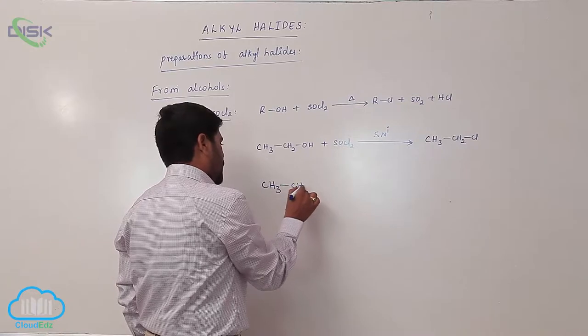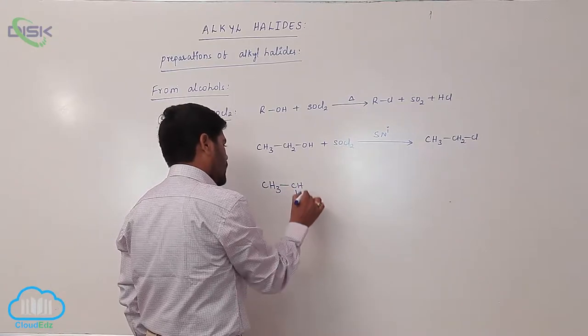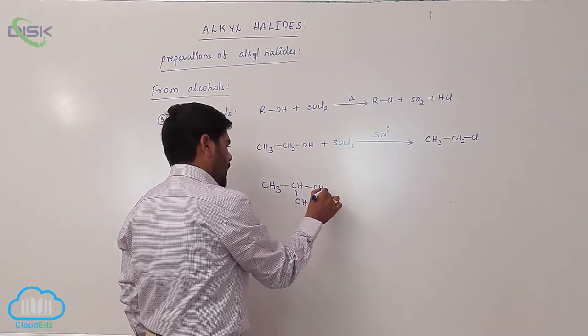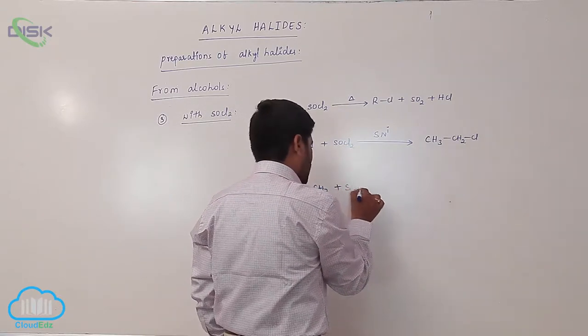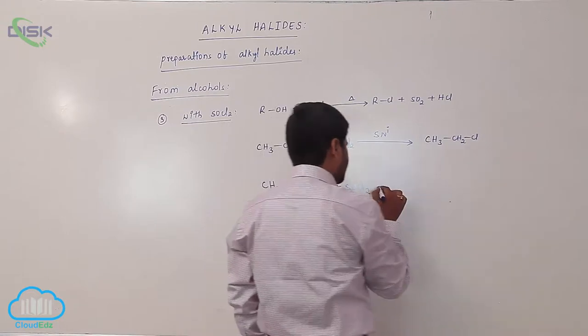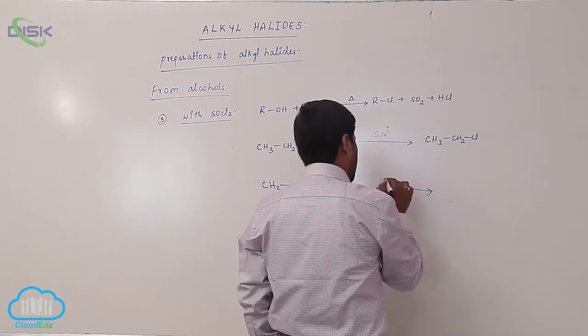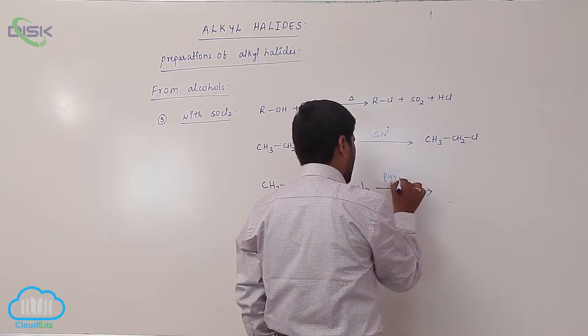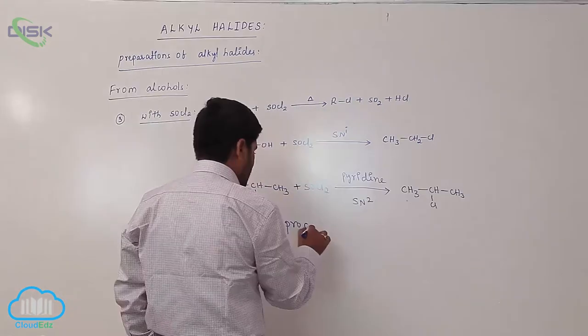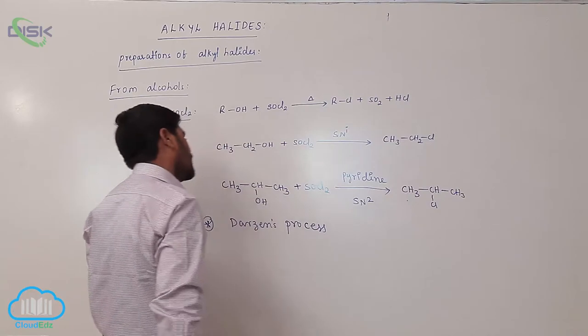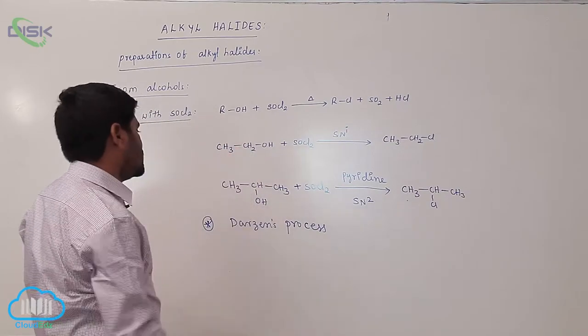When using isopropyl alcohol with thionyl chloride in presence of pyridine as a base, this is Durgen's process.